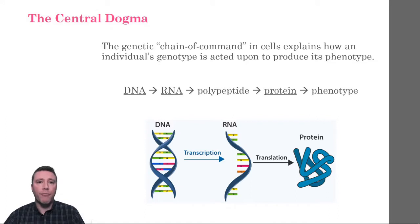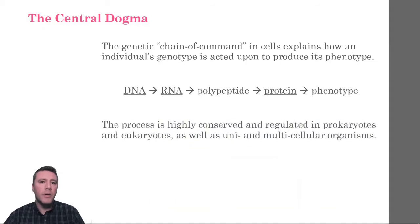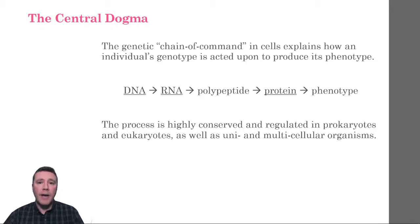The central dogma is a framework for understanding the transfer of information, in the form of a sequence of DNA nucleotides, into ultimately a sequence of amino acids. The process by which this occurs is described as highly conserved, due to its near-universal nature in all forms of life. It is widely referenced as one of the most substantial forms of evidence used to support evolutionary theory and the interrelatedness of all life.